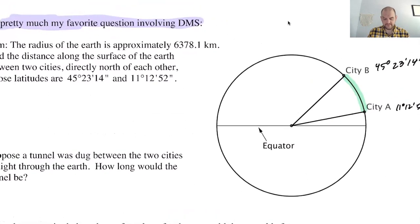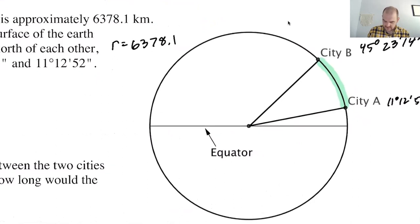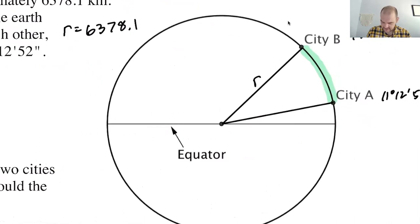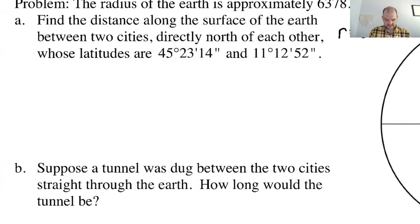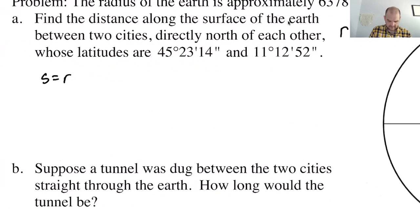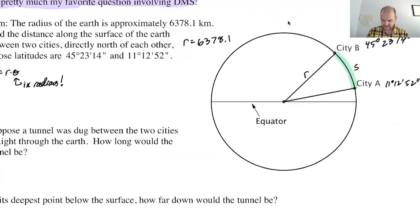If you look at the picture, we know R = 6378.1. The distance along the surface is arc length — this is S. And I know that S equals R times theta. The key thing here is that theta must be in radians. So I need to figure out what this angle is in radians.